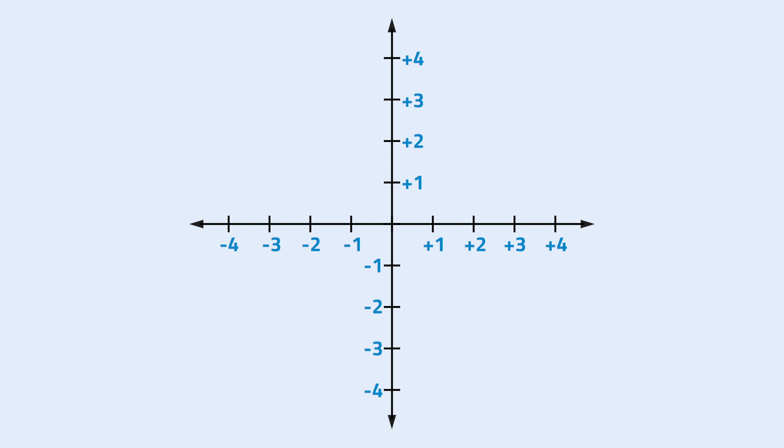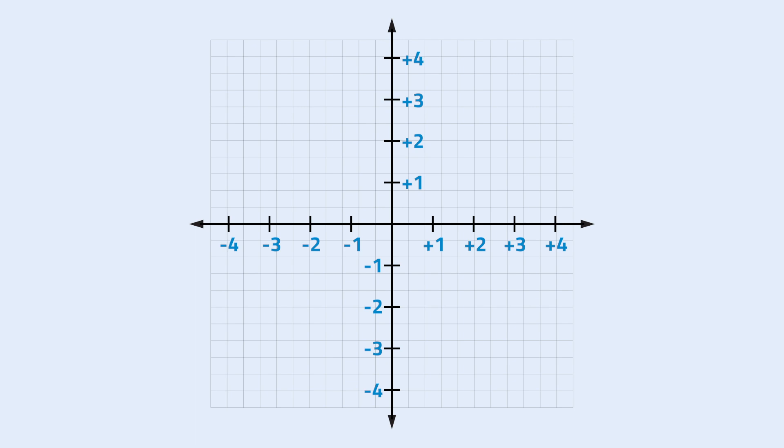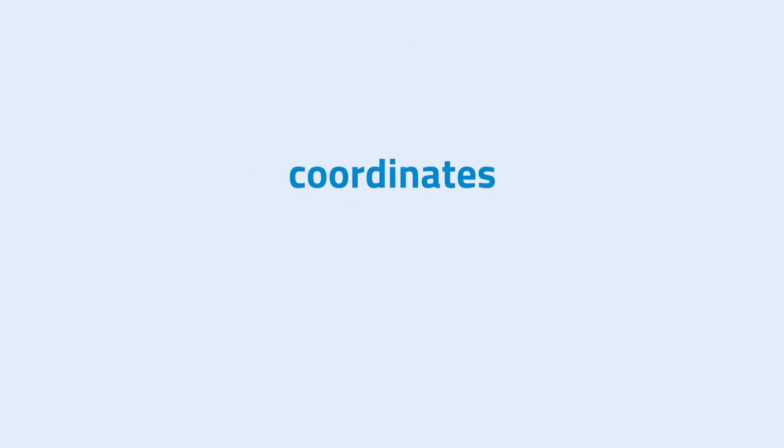Since every point on a number line represents a number, every point in this plane represents a set of numbers called coordinates. A coordinate is composed of two numbers separated by a comma and enclosed with a pair of parentheses. The first number is the x-coordinate, or abscissa, and the second is the y-coordinate, or simply ordinate.